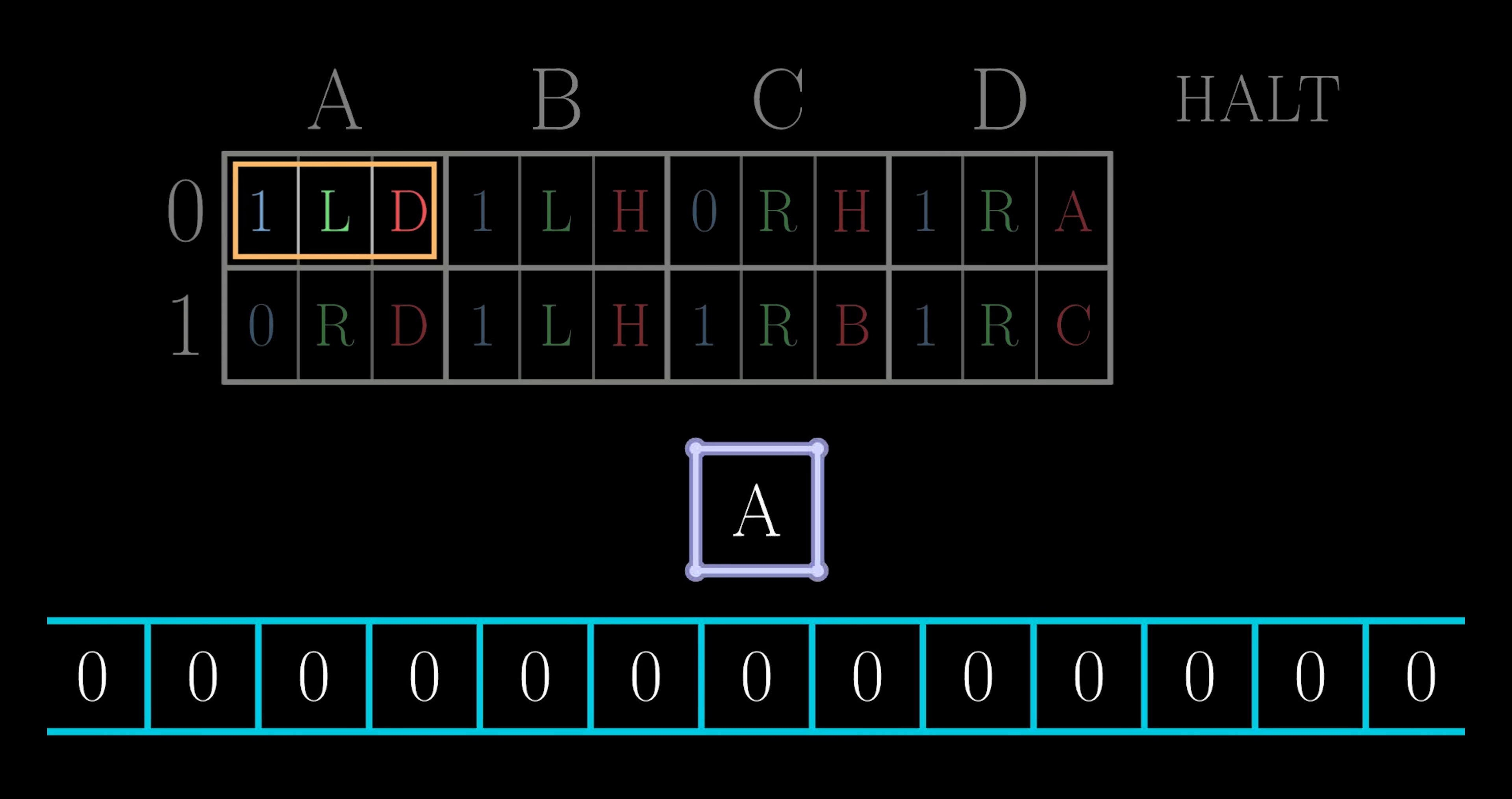So if we start with an all-zero tape, and in state A, then this machine operates like this.